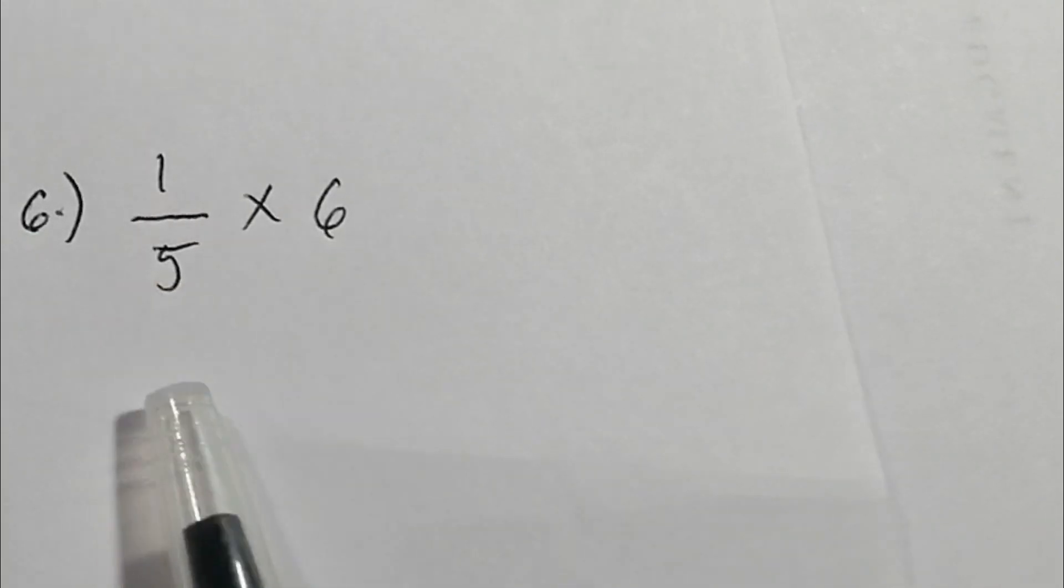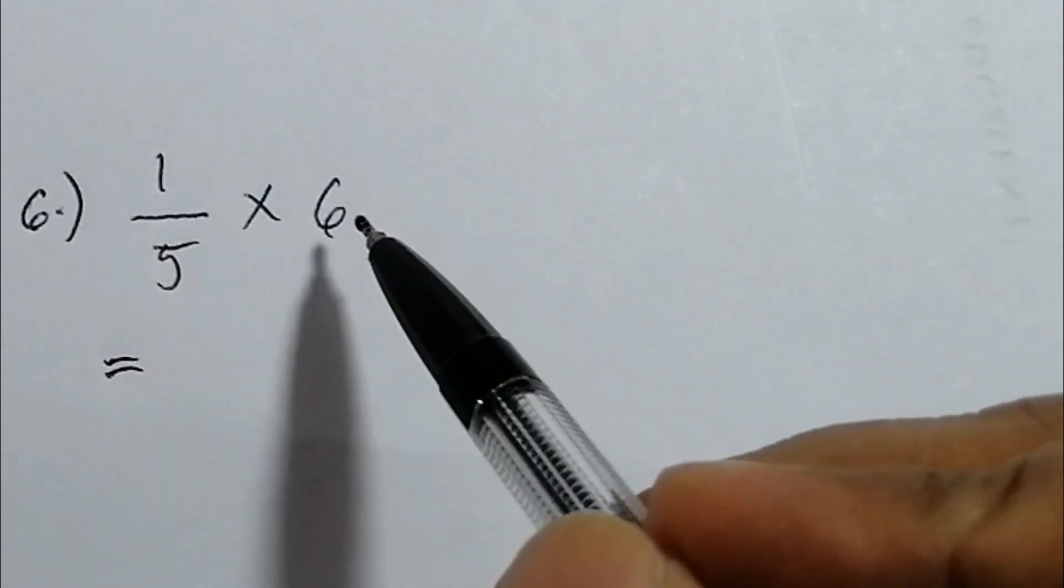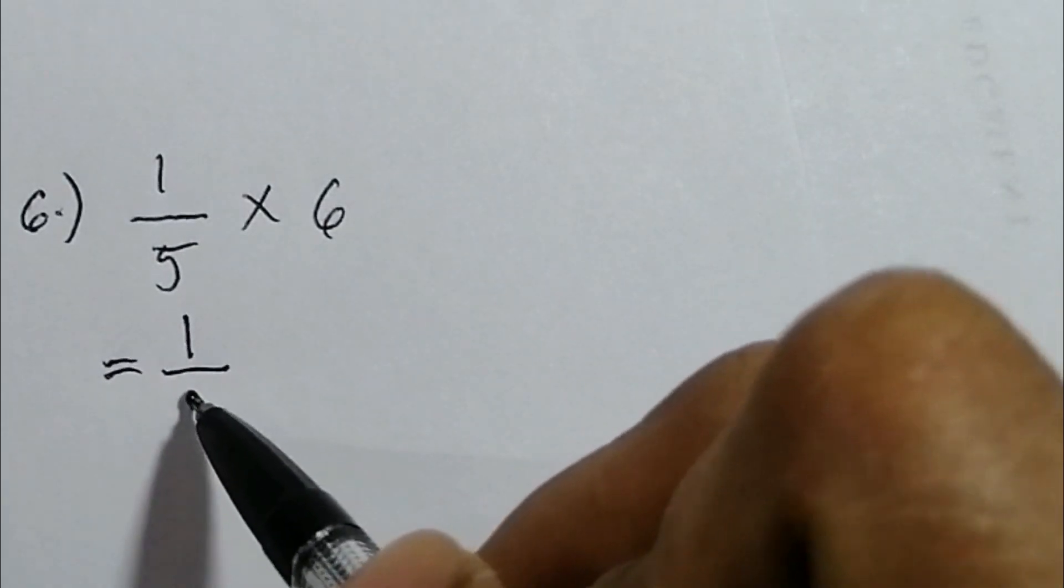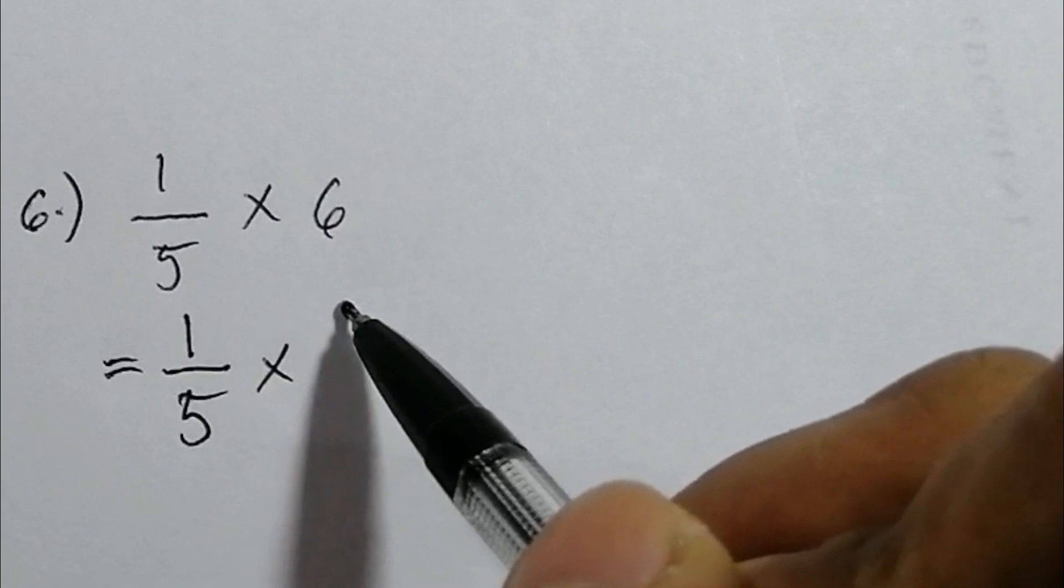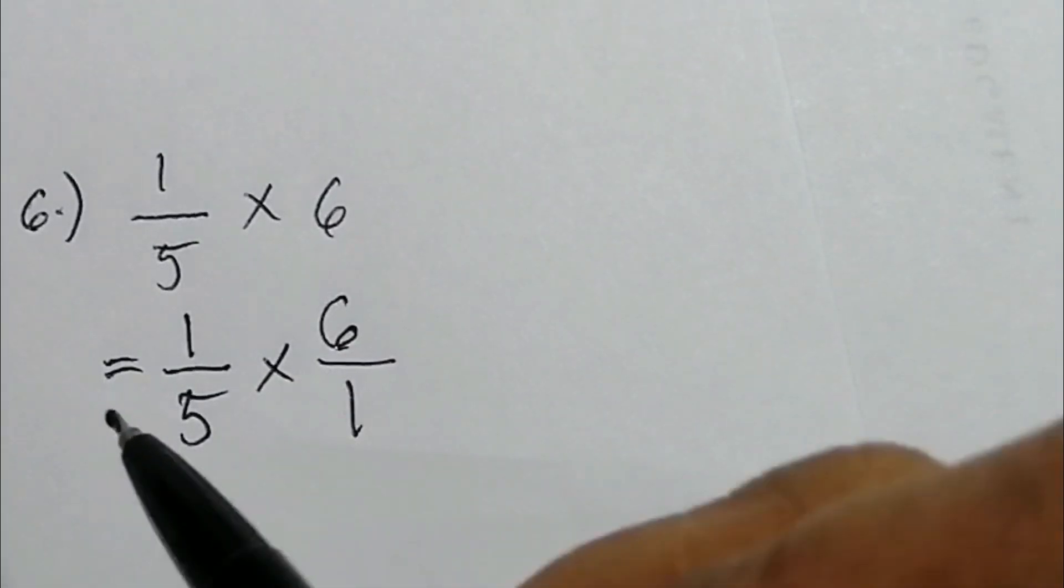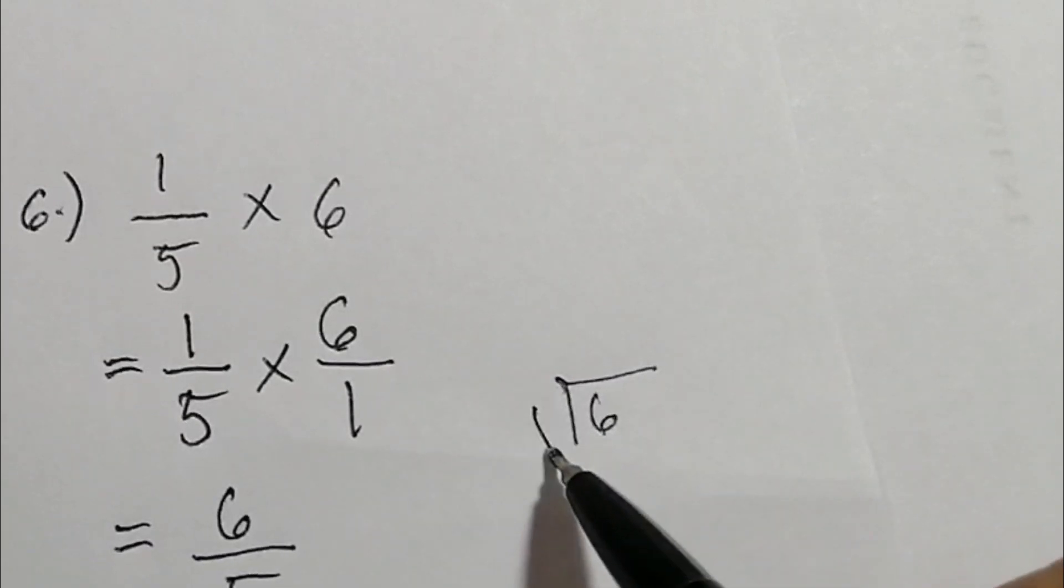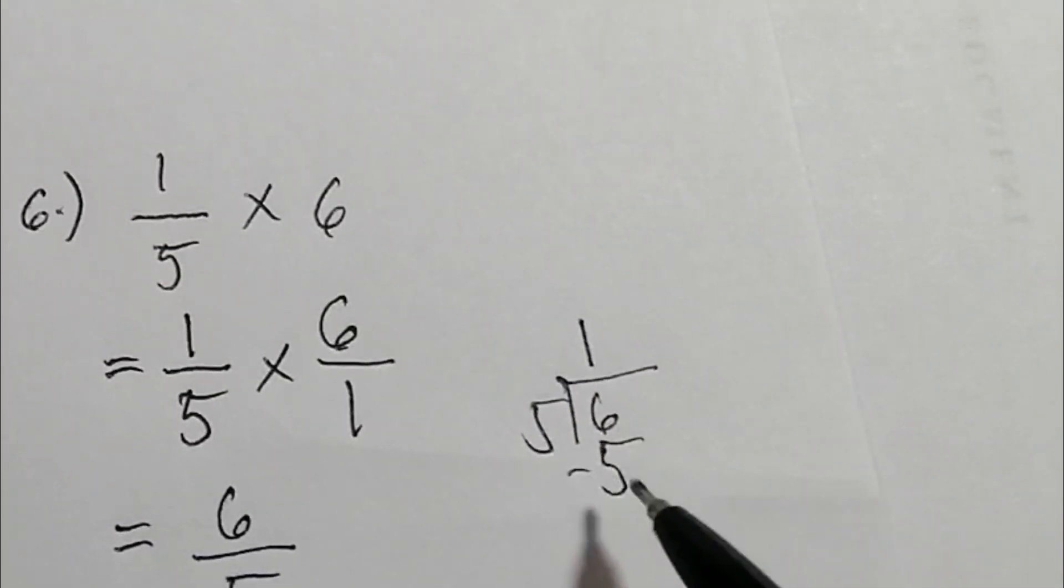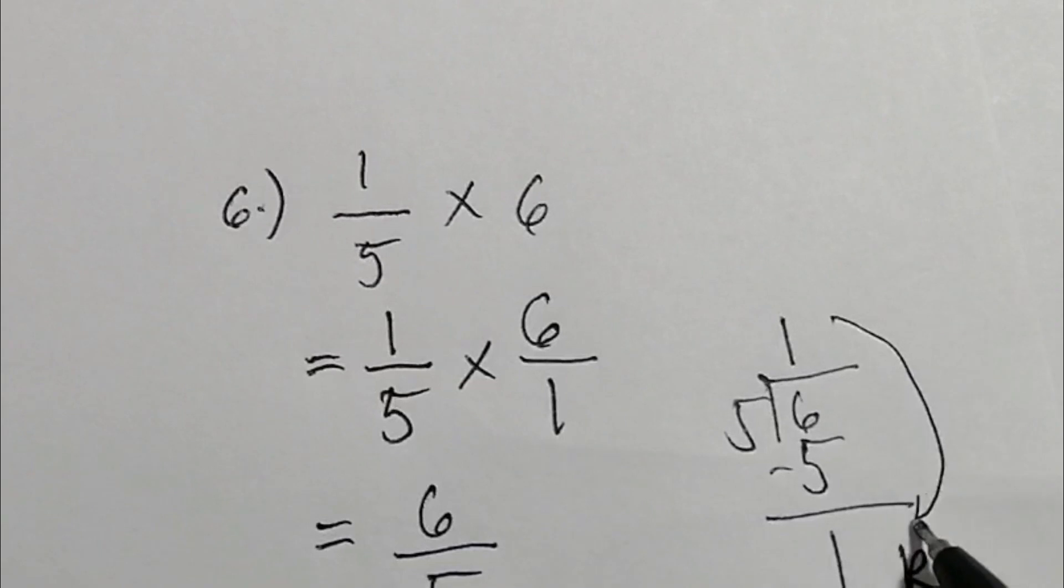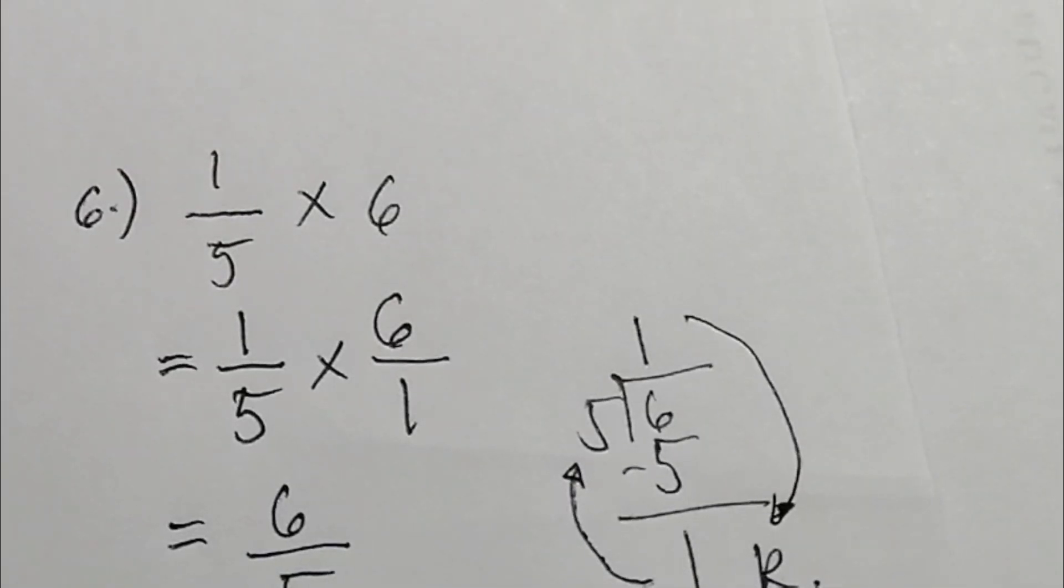Another example, one-fifth times six. So since meron tayong whole number dito, sulat muna natin, one-fifth times, gawin natin parang fractions siya, six over one. Now, one times six, six. Five times one is five. I-divide natin yung six sa five para mako natin yung lowest term. Six divided by five, one. One times five, five. Subtract. So bali, one ang remainder natin. Again, ganun ang sulat papunta dun sa divisor. Ang una is one, then one over fifth. This is our final answer. Easy as like that.